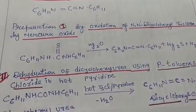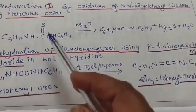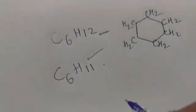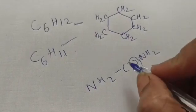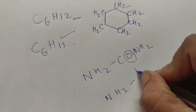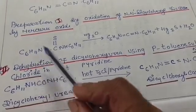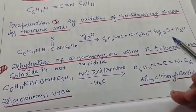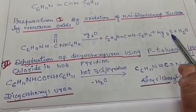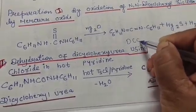For the preparation of DCC, the first method is the oxidation of N,N-dicyclohexyl thiourea by mercuric oxide. We know that urea is NH2-CO-NH2, and in thiourea the oxygen is replaced by sulfur, giving NH2-CS-NH2. In dicyclohexyl thiourea, two cyclohexyl groups replace the NH2 hydrogens. In the presence of mercuric oxide, oxidation occurs: the mercuric oxide is converted to mercuric sulfide, the sulfur is removed, and DCC — dicyclohexyl carbodiimide — is formed.